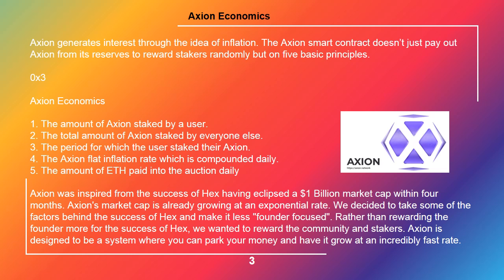Axion Economics: 1. The amount of Axion staked by a user. 2. The total amount of Axion staked by everyone else. 3. The period for which the user staked their Axion. 4. The Axion flat inflation rate, which is compounded daily. 5. The amount of ETH paid into the auction daily.